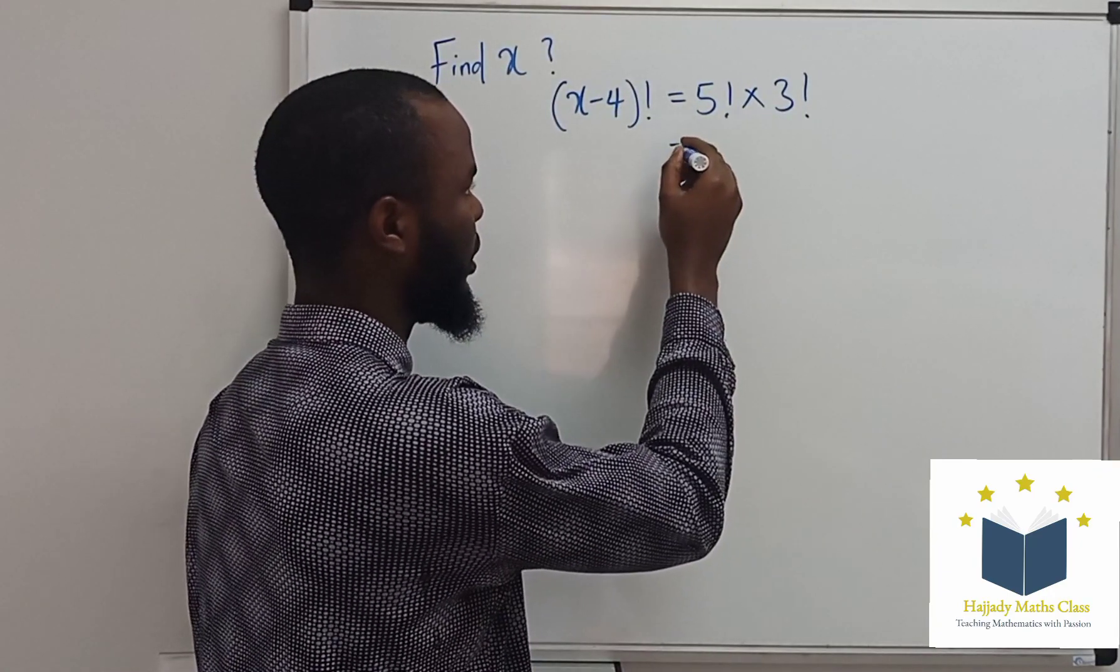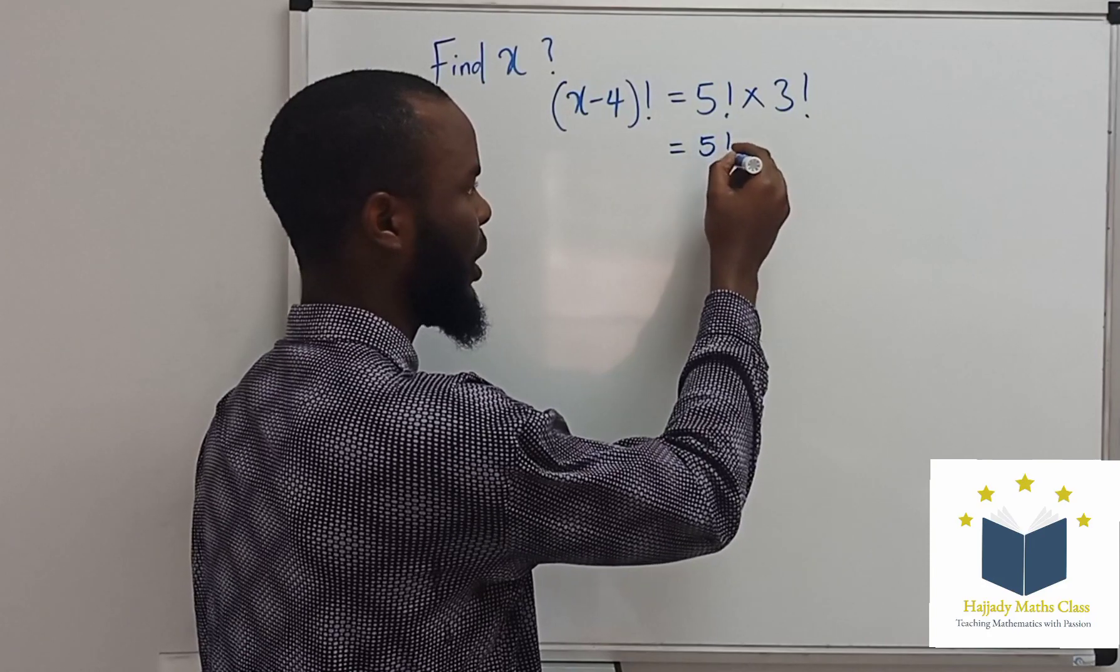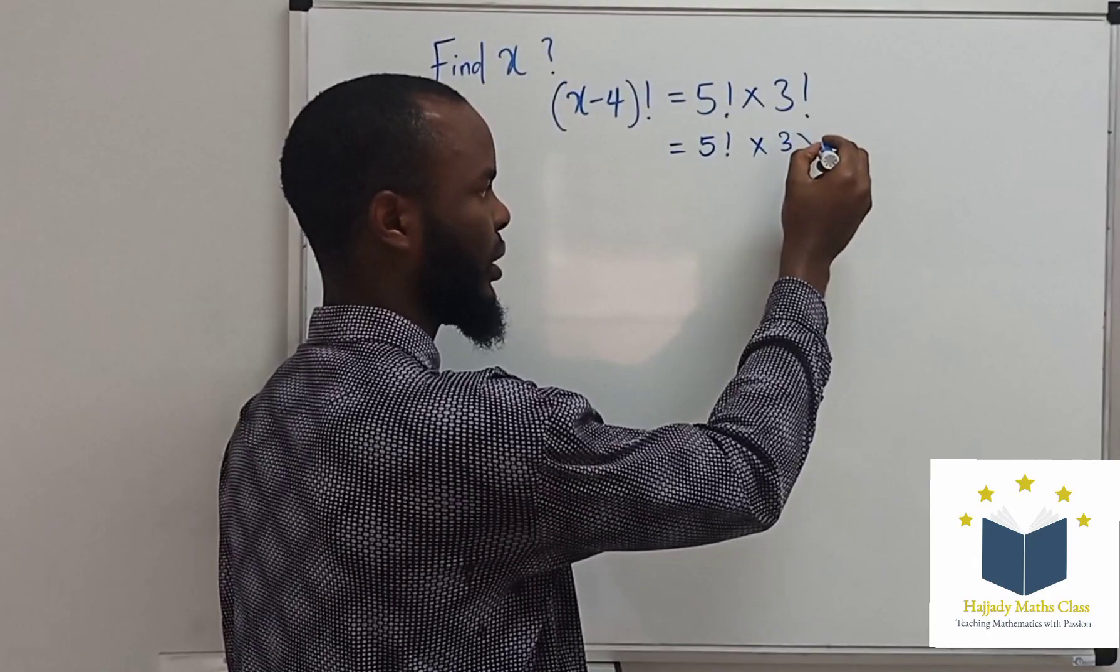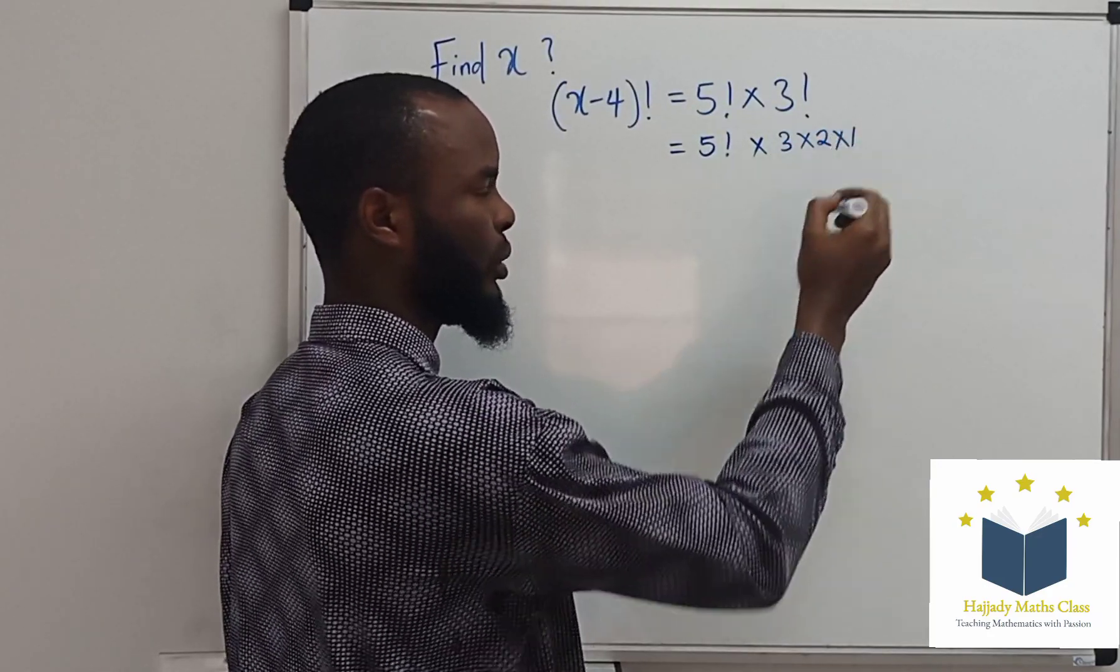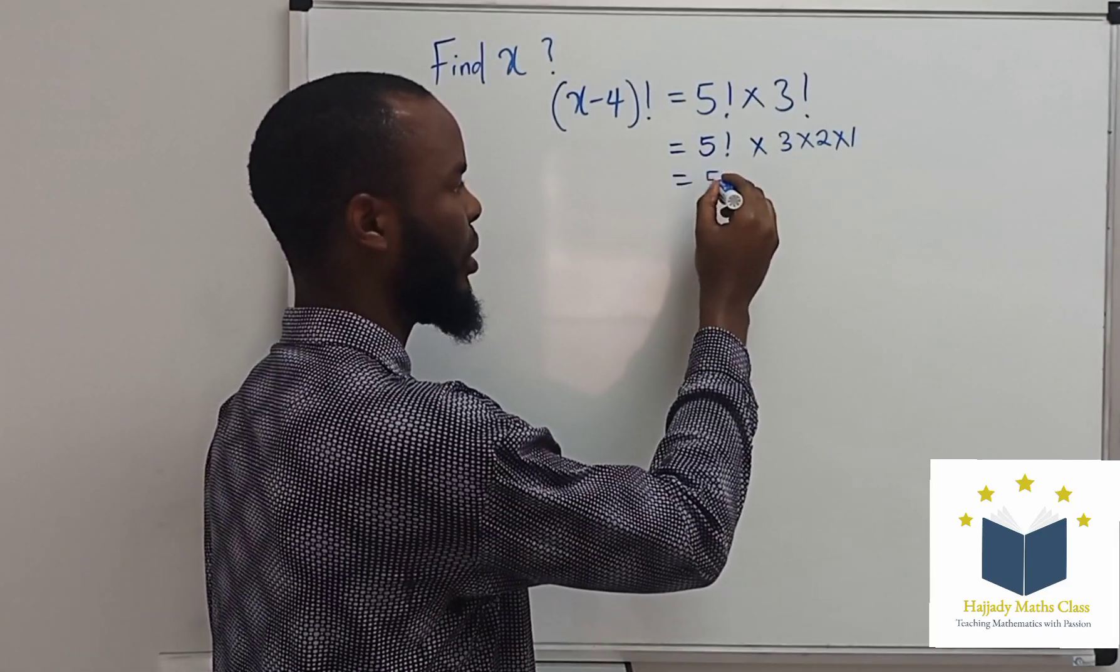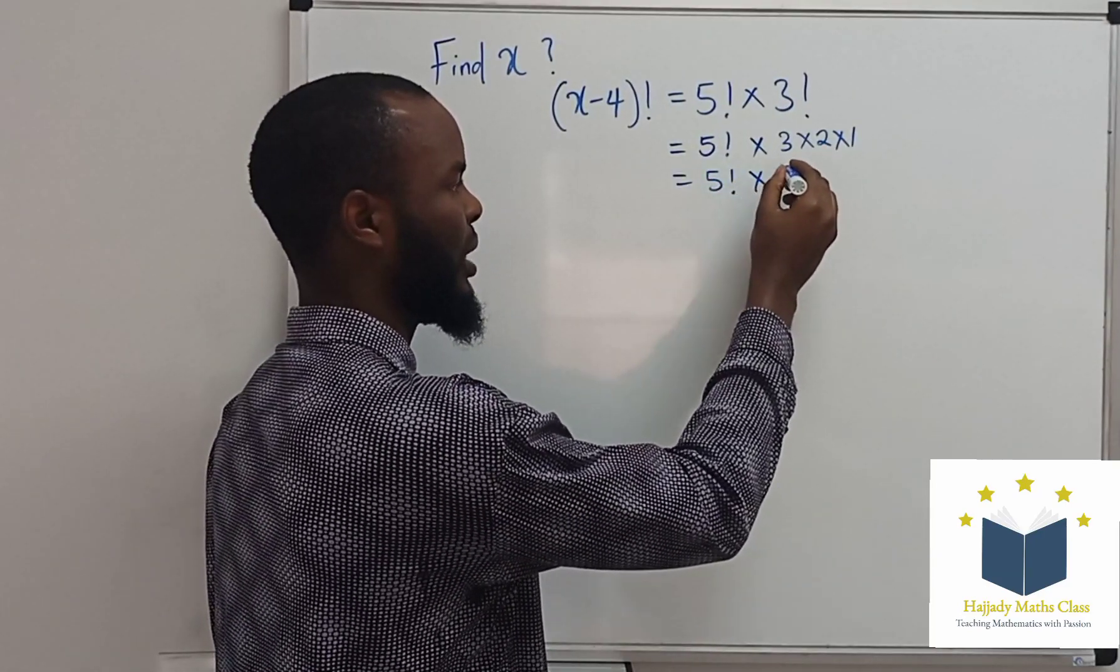So, this gives 5 factorial multiplied by 3 factorial is the same thing as 3 times 2 times 1. So, this gives me 5 factorial multiplied by 6.